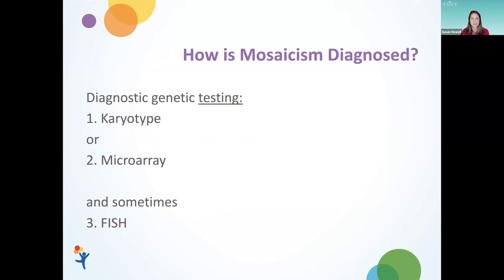So how is mosaicism diagnosed? Diagnostic genetic testing is typically done in one of two ways — it's typically ordered as a karyotype or a microarray. There's a supplementary test called a FISH test, which is sometimes ordered in conjunction with a karyotype or a microarray, but the FISH test standalone really doesn't tell us much — it really needs to be done in combination.